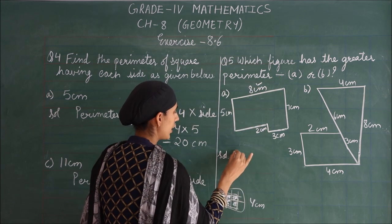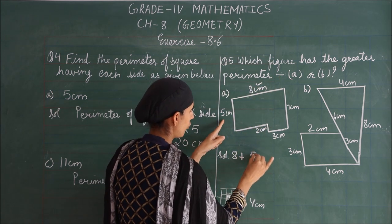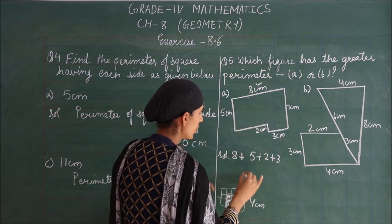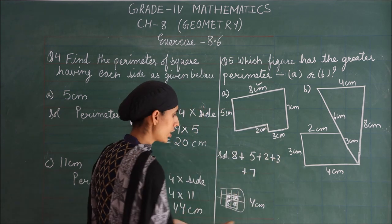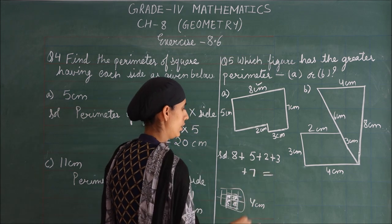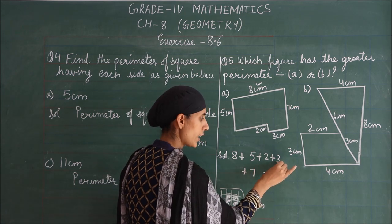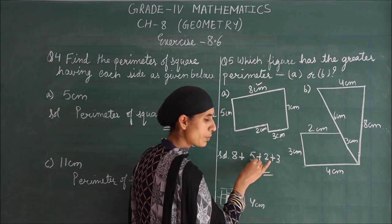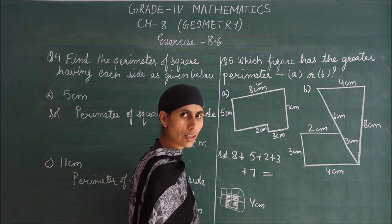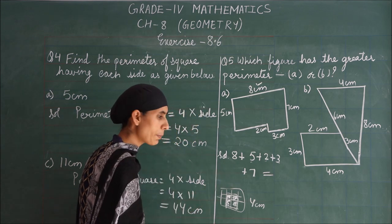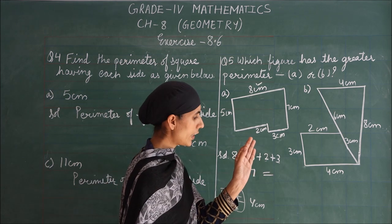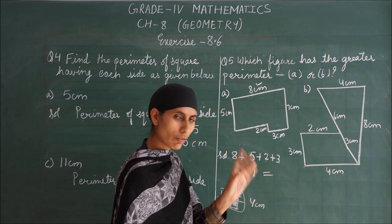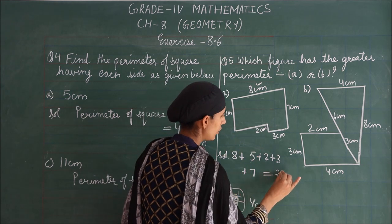For figure A, we add: 8 plus 5 plus 2 plus 3 plus 7. Let's calculate: 7 plus 3 is 10, 10 plus 2 is 12, 12 plus 5 is 17, 17 plus 8 is 25. So the perimeter of figure A is 25 centimeters.